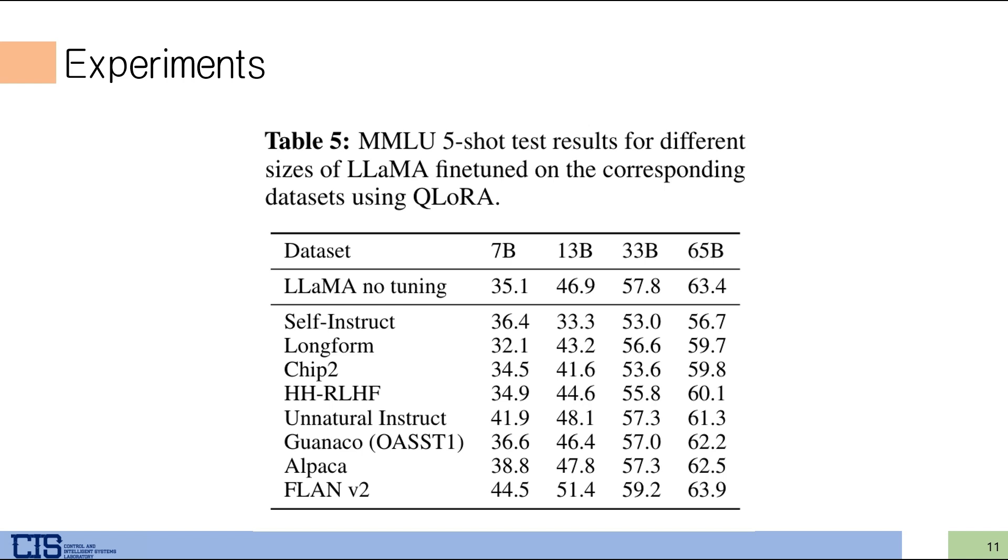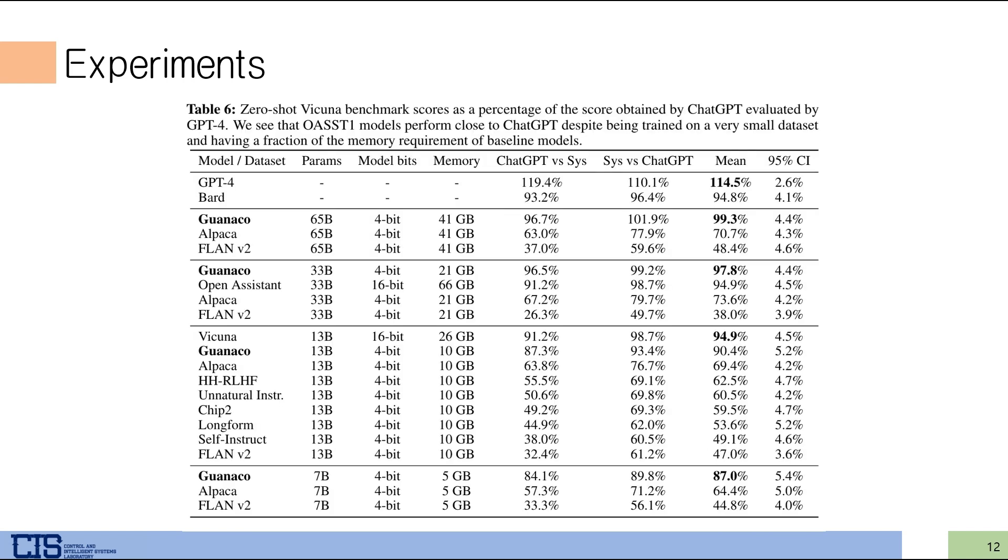Despite demonstrating good performance, the key point of this paper is that QLoRA requires significantly fewer resources compared to the leading models. For the previous research in five-shot scenarios, now these are the results for zero-shot scenarios. As shown in the table, in most cases, the Guanaco model proposed in this paper demonstrates the best performance. Even in the 13 billion model where Vicuna shows the best performance, Guanaco uses only 10 gigabytes of memory compared to Vicuna's 26 gigabytes, highlighting significant resource savings.